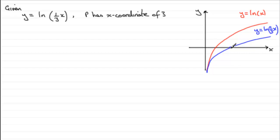And this is our point P then. Because if P has an x-coordinate of 3, you do one-third of 3, you've got the natural log of 1, and the natural log of 1 is 0. So that's got to be your point P. So there's P then having coordinates 3, 0.